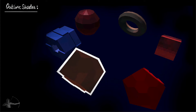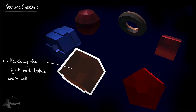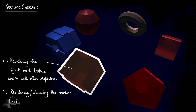If we try to deconstruct the shader, we will see that the shader is divided or composed of two different components. One is rendering the object with texture and or with any other properties — this is similar to what we had been doing when we created a texture shader. Another component is rendering or drawing the outline, and this will be behind the actual object, so any part should not overlap the actual rendering of the object's shape. So these are the two different components of the outline shader.